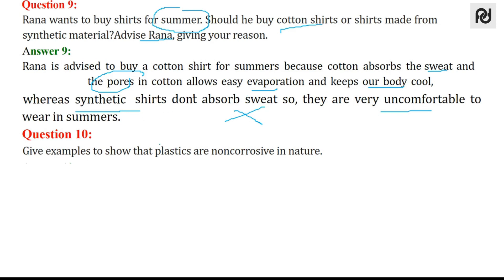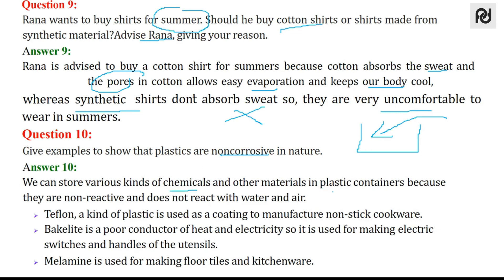Question 10: give examples to show that plastics are non-corrosive in nature. Consider a container in which you have kept pickles or any other food items — it will not react with them. Plastics are non-corrosive because we can store various kinds of chemicals and materials in plastic containers, as they are non-reactive and do not react with even water and air. Teflon is used for non-stick cookware, bakelite is a poor conductor of heat and electricity used for electrical switches, and melamine is used for floor tiles and kitchenware.